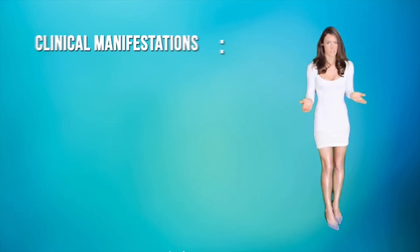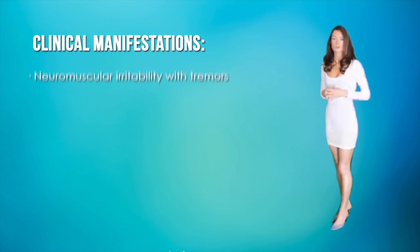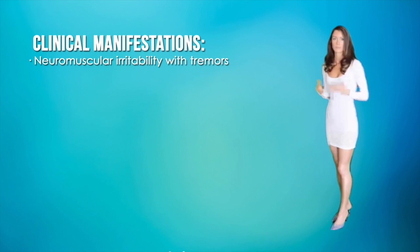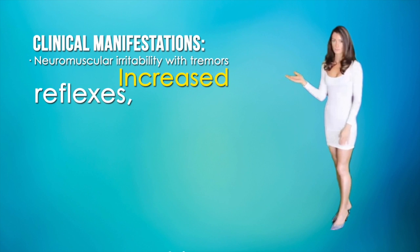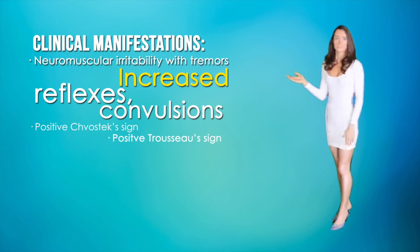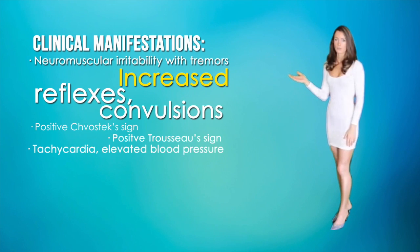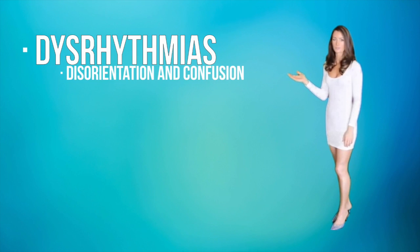Clinical manifestations. In the neurologic system, these can include irritability and tremors, increased reflexes, convulsions, a positive Chvostek's sign and a positive Trousseau sign, tachycardia, elevated blood pressure, dysrhythmias, disorientation, and confusion.